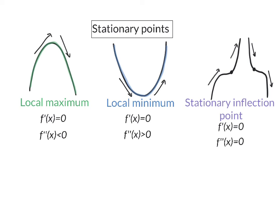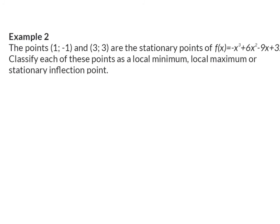Let's have a look at an example on classifying stationary points. Example two: the points (1, −1) and (3, 3) are the stationary points of f. Classify each of these points as a local minimum, local maximum, or stationary inflection point. The first part of the work has been done for us since we are already given the two stationary points, so now we need to classify them using the second derivative.